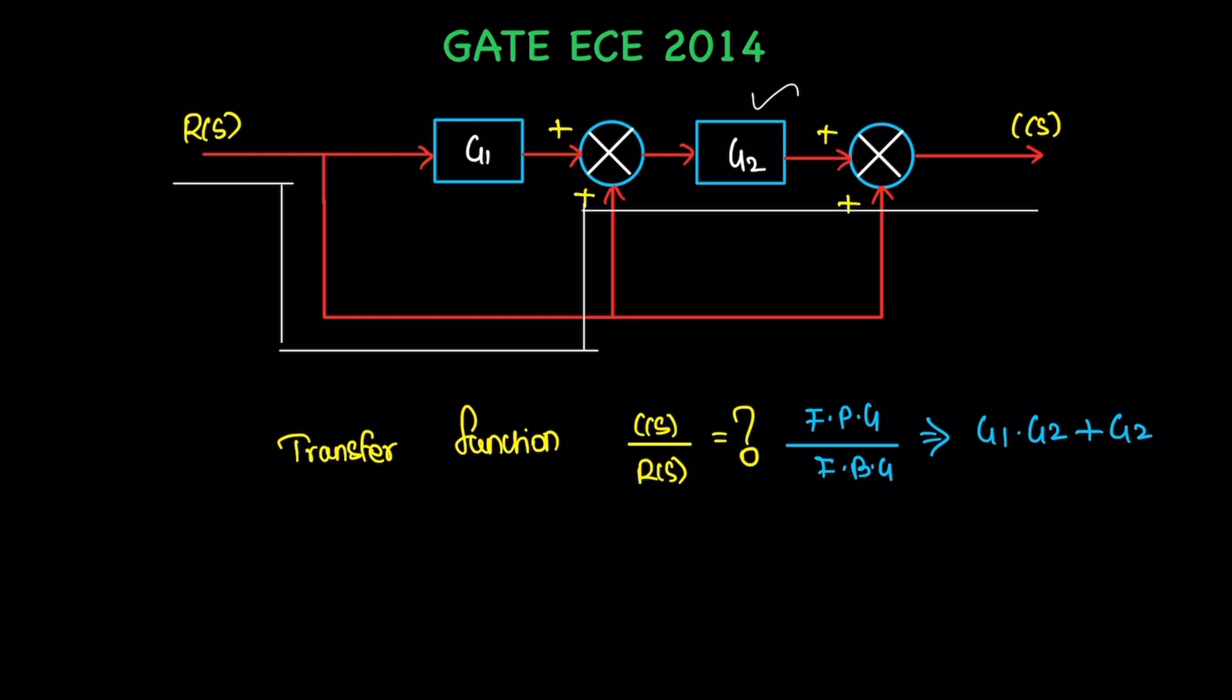Then the third path, this way. There is no blocks in this path, so the result is just one only. So, plus one.